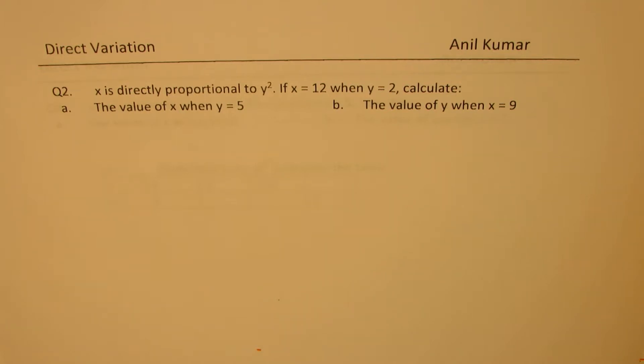Question number two is: x is directly proportional to y square. If x equals to 12 when y equals to 2, calculate the value of x when y equals to 5, and calculate the value of y when x equals to 9.